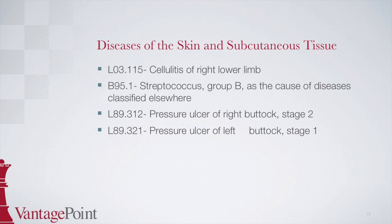The next code is B95.1, streptococcus group B as the cause of diseases classified elsewhere. To locate this code, start at infection in the alphabetic index and then find bacterial indented below. From here, find the phrase 'as cause of disease specified elsewhere,' followed by streptococcus and then group B indented below, which points to B95.1, which you would then confirm in the tabular.